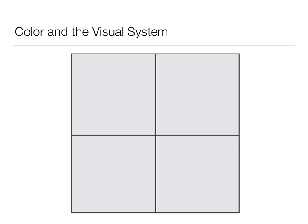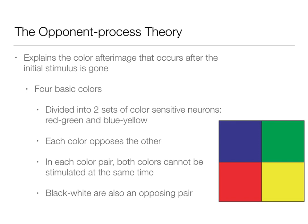What do you see now? If you stared for about 30 seconds, you should have a really strong after-image — and that after-image is kind of the opposite of the colors. This after-image is explained by the opponent process theory, which says there are actually four basic colors divided into two sets of color-sensitive neurons: red-green and blue-yellow. When you looked at the blue, you should see an after-image of yellow; the yellow gives an after-image of blue; red gives green; and green gives red.